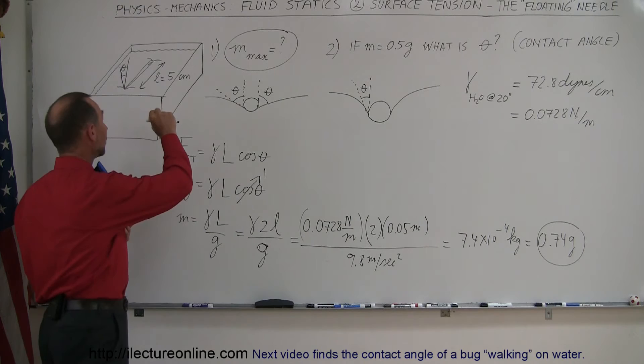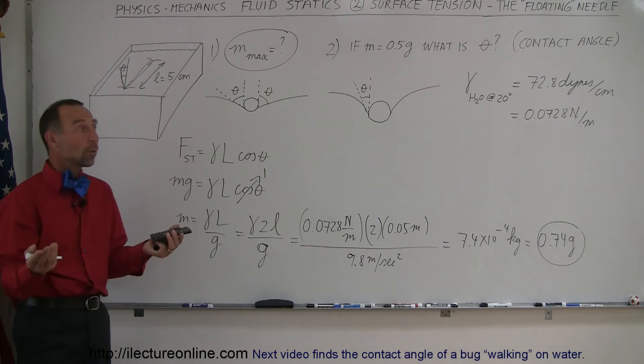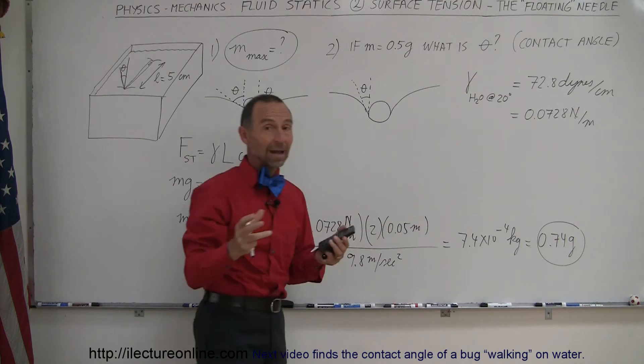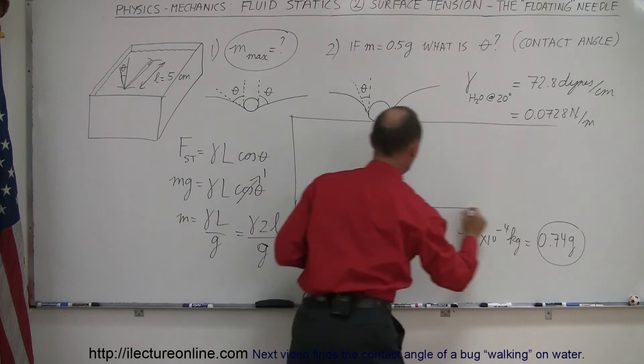That's the heaviest needle you can place on water and still have it upheld by the surface tension — a little bit less than three quarters of a gram, provided the needle is 5 centimeters long. For the second part of the question, what would the contact angle be if the mass was only 0.5 grams? Less mass means we don't need a zero-degree contact angle, so for the second part of the problem we use the same equation but the angle is not zero.